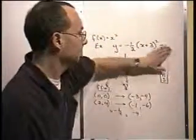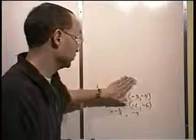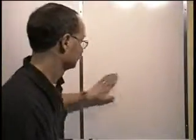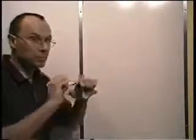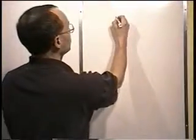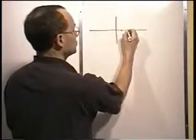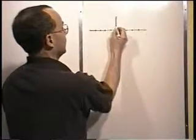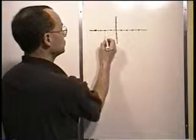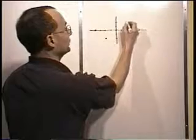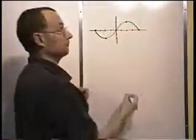Let's do another example. Each example will show a couple of different approaches to different kinds of questions. In this next example, a graph is provided but no function is specifically given. The graph I have in mind has points going four to the left, up two, and down two — a nice curved shape. This is f of x, and I want to graph some twists and turns applied to it.